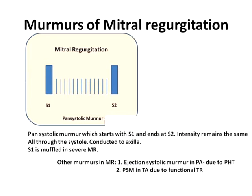The typical murmur of mitral regurgitation is the pansystolic murmur, which is heard in the mitral area. The pansystolic murmur starts along with the first sound and ends at the second sound. The intensity remains the same and does not fluctuate through the systole. The murmur can be conducted to the axilla or sometimes to the base of the heart.